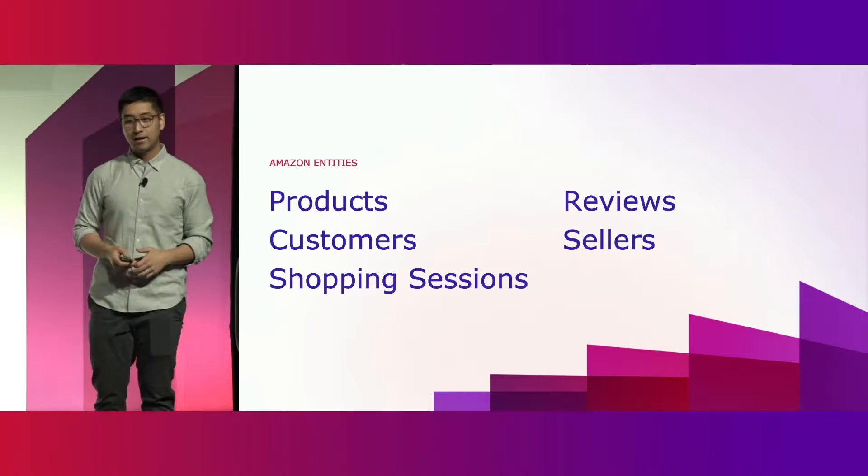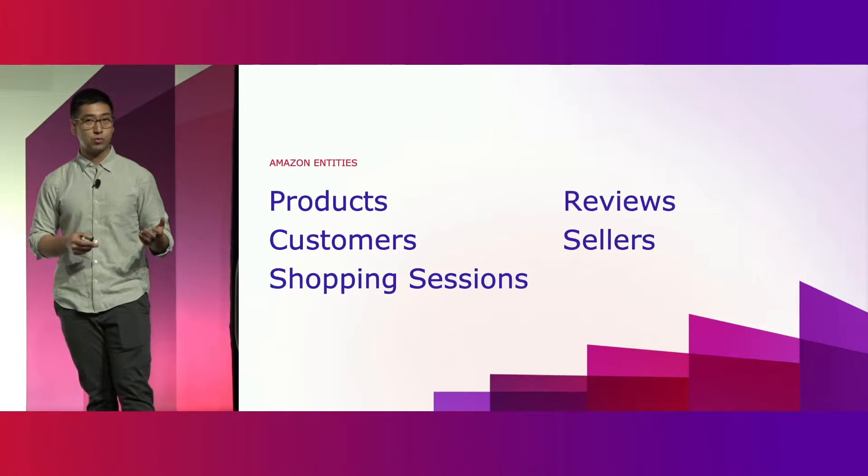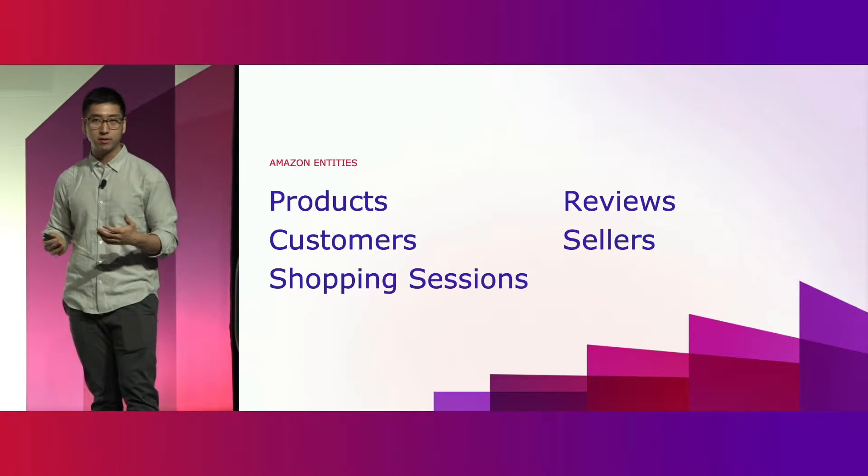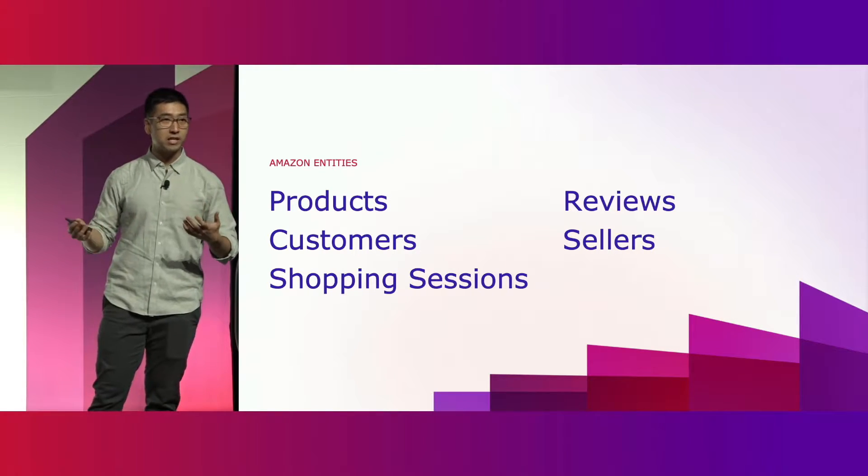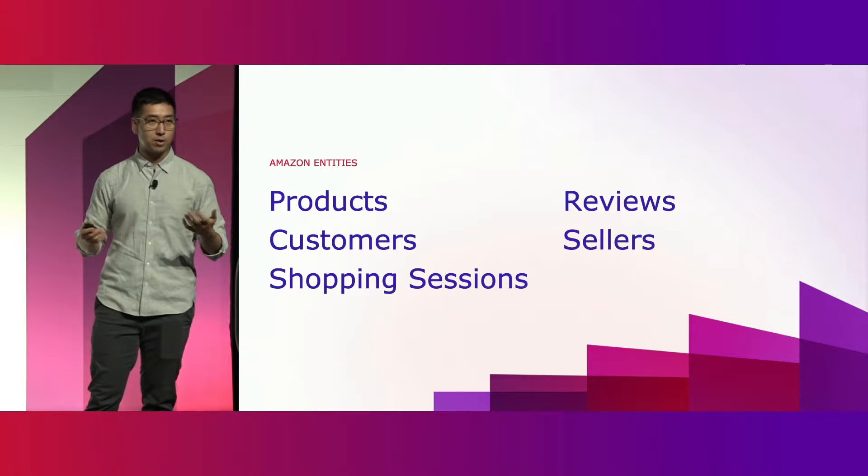A bit of a team intro. We're called Search Science and AI, and we are mostly an applied ML team within the larger search organization at Amazon. One of our goals is to build state-of-the-art universal semantic representation of Amazon entities. I'm going to spend the next two slides dissecting what this means so that we can all understand what we mean by this statement.